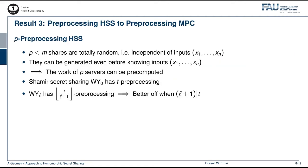For the third and last result, we show how preprocessing HSS schemes can be used to construct preprocessing MPC schemes. We say that an HSS scheme has P preprocessing if P of the M shares are totally random, which means that they are independent of the inputs x1 up to xn. In fact, they can even be generated before knowing the inputs x1 to xn. Therefore, the work of P servers can be precomputed. For example, the Shamir secret sharing scheme, or WY0, has T preprocessing. In general, the scheme WYL has T over L plus 1 preprocessing.